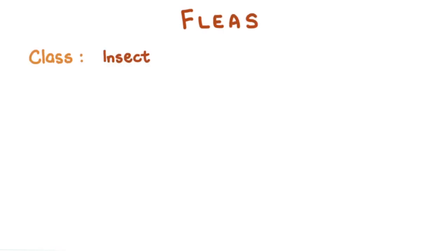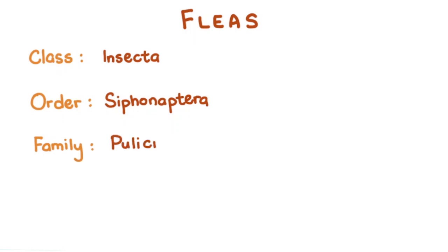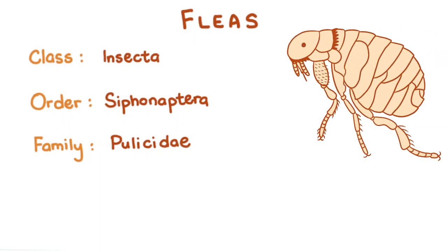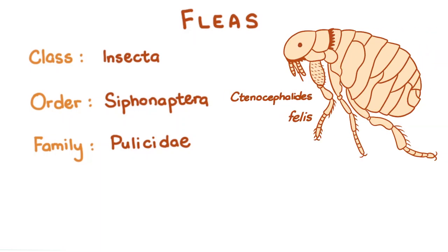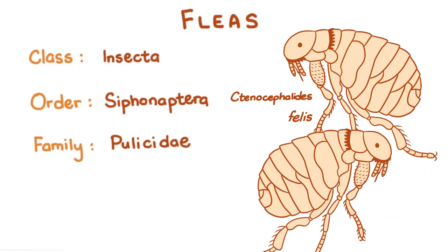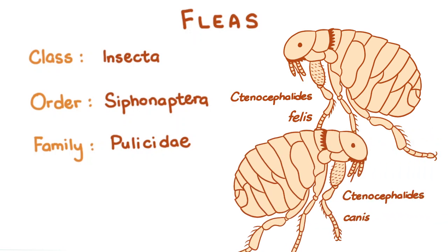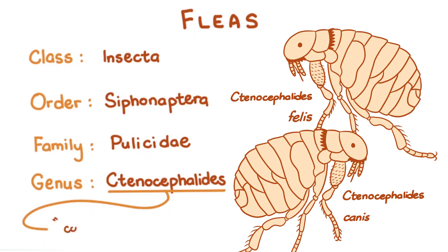Fleas belong to the class Insecta, order Siphonaptera, and family Pulicidae. There are over 2,000 species of fleas, but for this video we'll focus on the cat and dog flea. The fairly common cat flea is the Ctenocephalides felis, and the less common dog flea is the Ctenocephalides canis — Ctenocephalides meaning cockle or comb-like head.